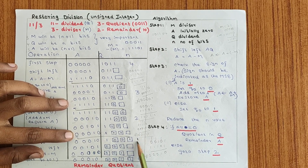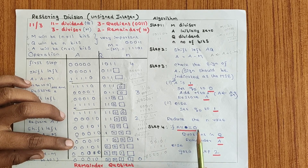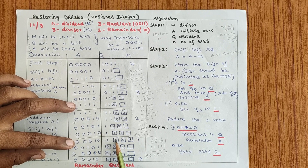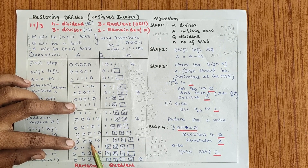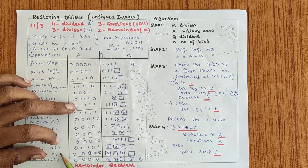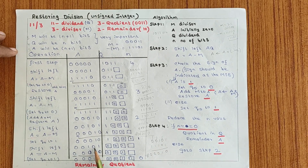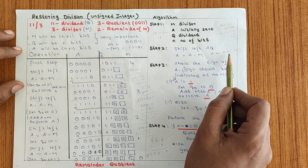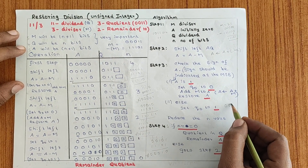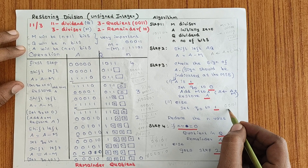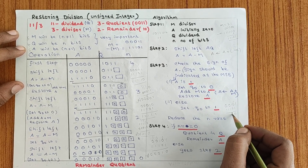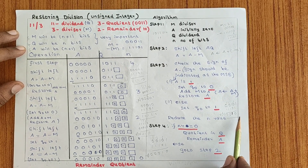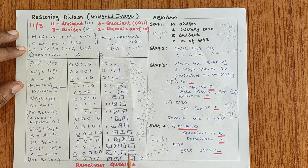Check N == 0: no, go to step 2. Perform shift left AQ: this gives A = 000101 and Q = 0101 with empty space. Perform A ← A + (−M): A is 00101 and −M is 11101. Adding gives 000010, stored in A. Check sign of A: MSB is 0, so set Q0 to 1. Reduce N to 0.